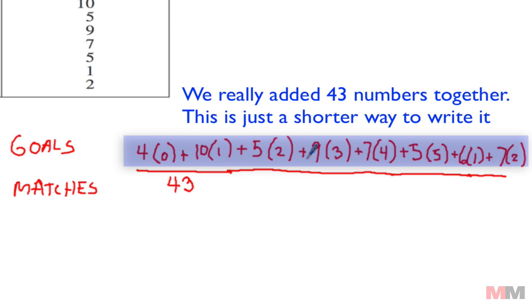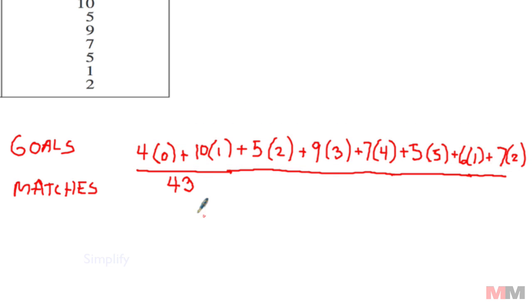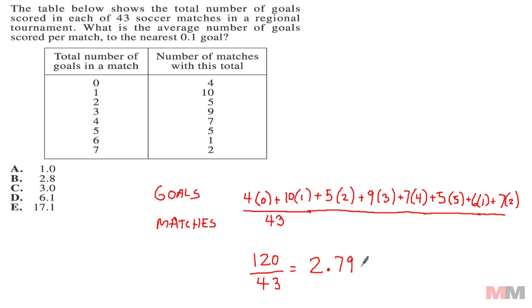Adding up all the numbers in the matches should match up with 43. If I clean up the numerator, I get 120 divided by 43, that equates to 2.79. The problem says to round it to the nearest tenth of a goal, so I would get 2.8, letter B.